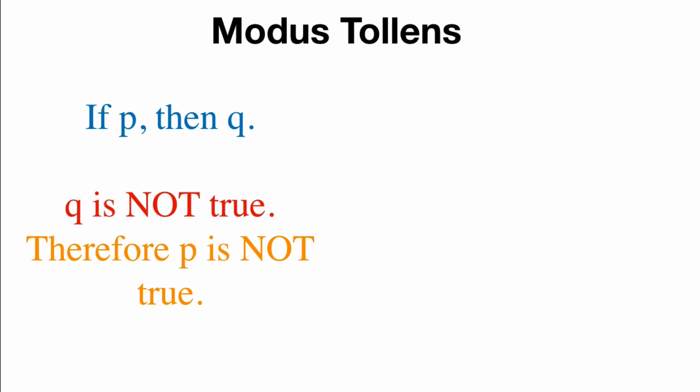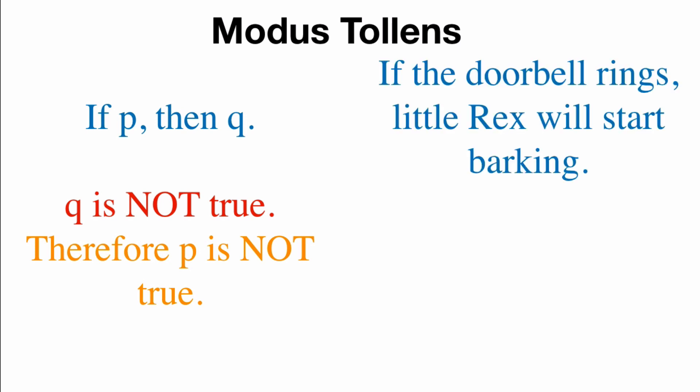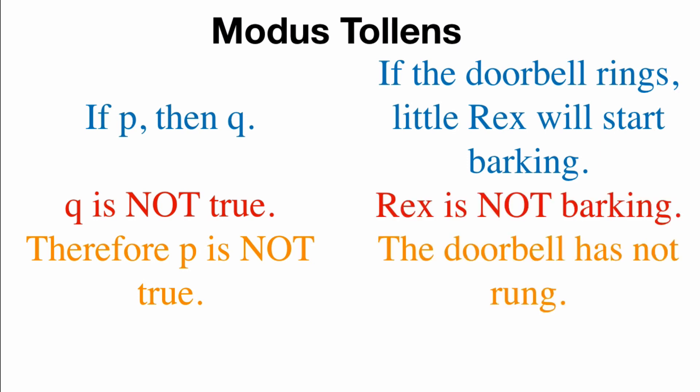So let's take a look at the logical structure. We start off with the same hypothesis, if P, then Q, but then we work at it backwards. We state that if Q is not true, that leads us to the conclusion that P is not true. And again, let's do our example with little Rex. If the doorbell rings, little Rex will start barking. But Rex is not barking, we can conclude the doorbell has not rung. Again, this is very straightforward, logically consistent.